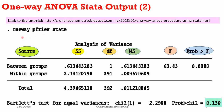The syntax for running the one-way ANOVA in Stata is: oneway y-variable x-variable. So in my case I have: oneway pfries state. Once you do that, you have your ANOVA output. Let me quickly explain each of the headings on this output table.